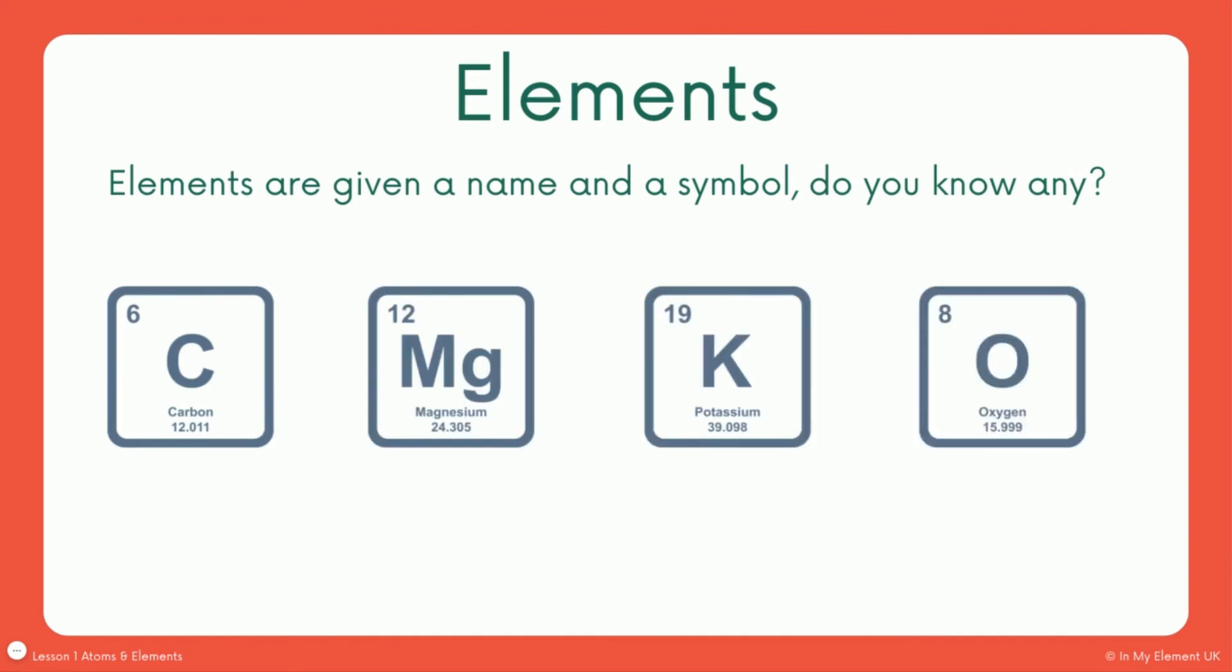So if you look here, there are four elements and they're given their symbol, written their name underneath. And they've also got two numbers. The top one is an atomic number and this one here is the mass number. We'll go into these in more detail in key stage four. You don't need to work anything out or anything like that, but you just need to be aware that those numbers are there and you can't change them.